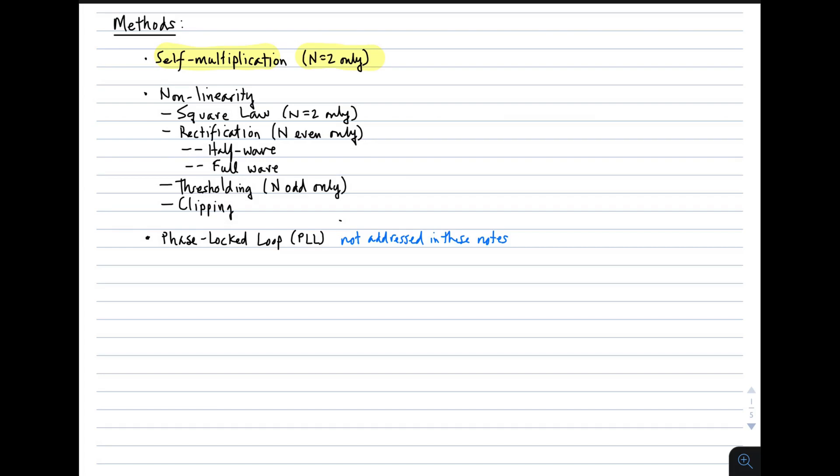Another approach is to use a non-linearity. There are many kinds of non-linearity. One is square law non-linearity. That gives you n equal 2 only. There is rectification, which will give you even values of n, and that includes half-wave and full-wave rectification. There's thresholding, which will give you odd values of n, and then clipping. So these are all methods that use some form of non-linearity. Then once again, we have phase-locked loops, which is a method not addressed in these notes.